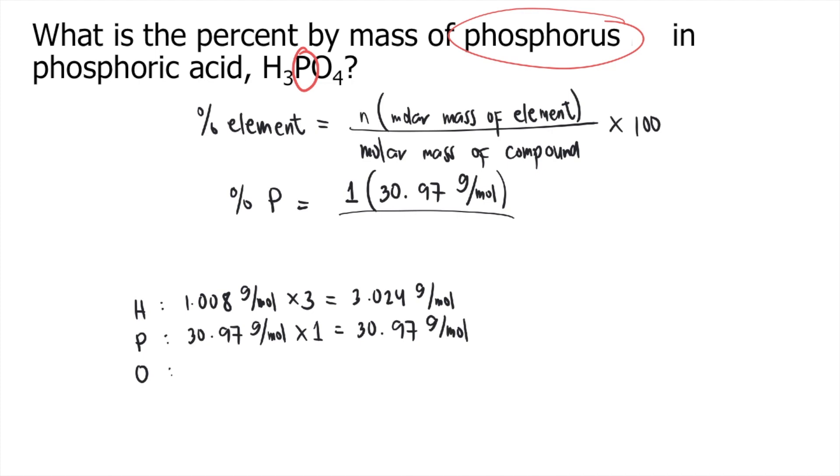Oxygen has a molar mass of 16 grams per mole. And there are four oxygens in H3PO4. So that's 64 grams per mole. And if you get the total, that's equal to 97.994 grams per mole.